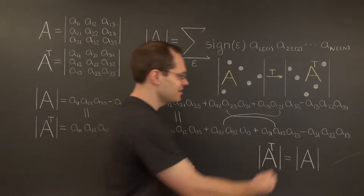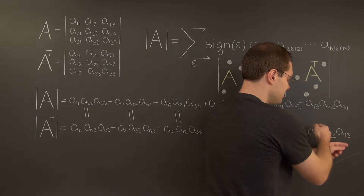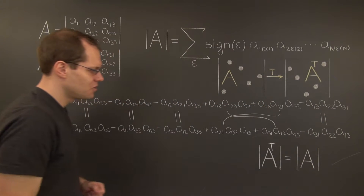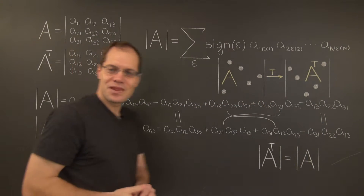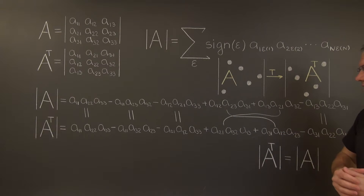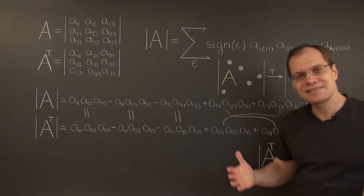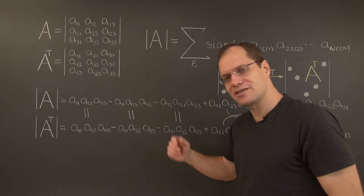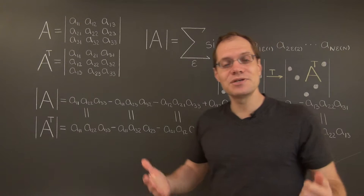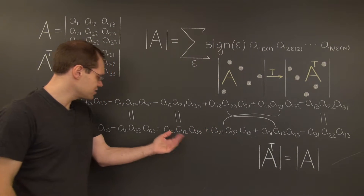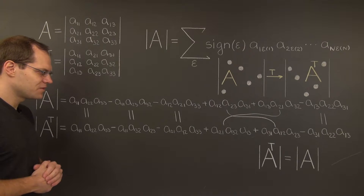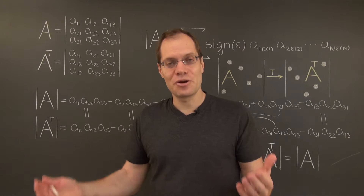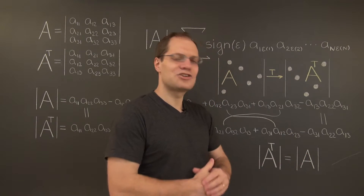Finally, in the last two terms, these values simply trade places and so those two terms are equivalent. The expression on the bottom does not appear in standard form, but it is the determinant of A transpose, because it was obtained from the determinant of A by switching the subscripts. And as we can see, in aggregate these two expressions are equivalent. This proves that for general 3×3 matrices, the determinant of A equals the determinant of A transpose.